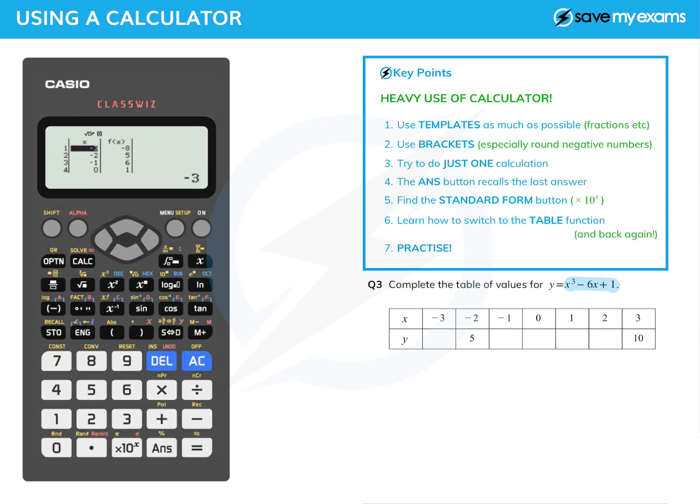You can see the values of x in the left hand column and f of x in the right hand column. Minus three gives minus eight, minus two gives five, that's a good check. Minus one gives me six, zero gives me one. Where are the other numbers? I need to scroll down using the down arrow. X is one, f of x is minus four. If x is two, y equals minus three. Finally, x is three gives me y equals 10.